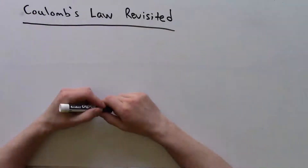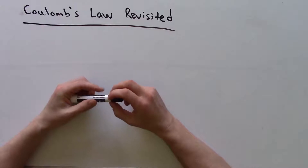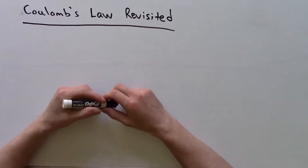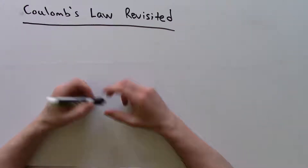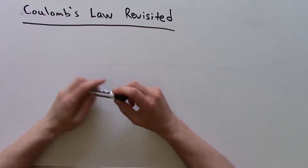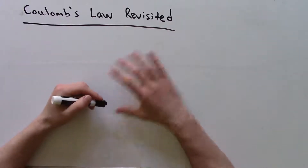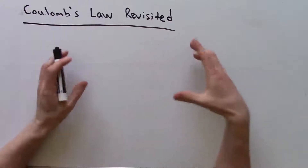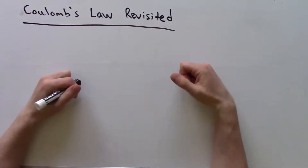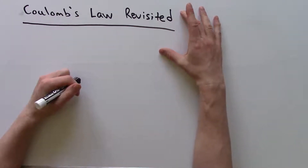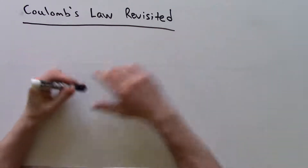Hey everybody, welcome back to Numerical Techniques for Electromagnetics. This will be our final section for the semester in which we discuss the method of moments, which is kind of a general expansion on that inverse process we talked about in the previous lessons. Now before we get too deep into what the method of moments is, it's going to help to frame it in terms of a familiar electrostatic problem. So I'd like to begin by reviewing Coulomb's Law a bit, just to sort of set the stage.